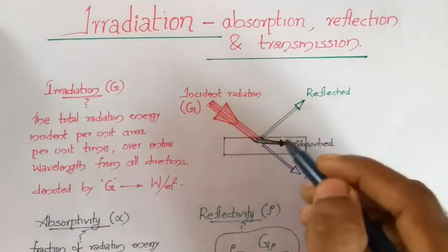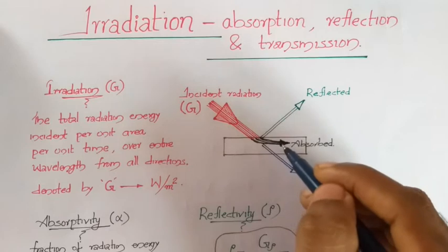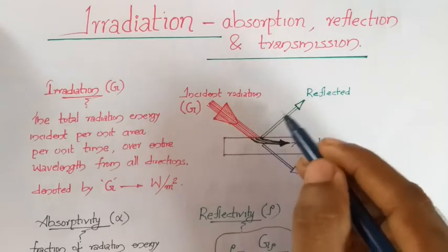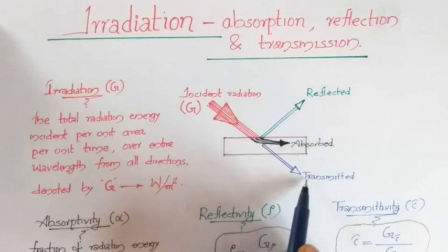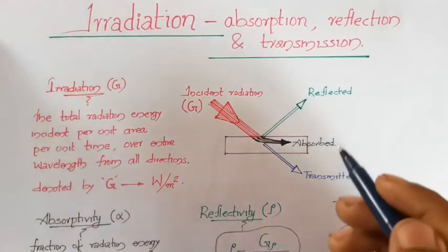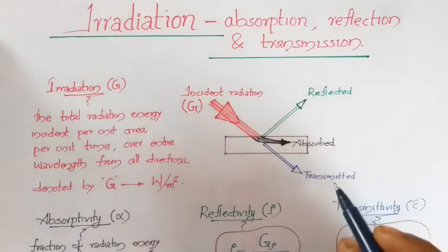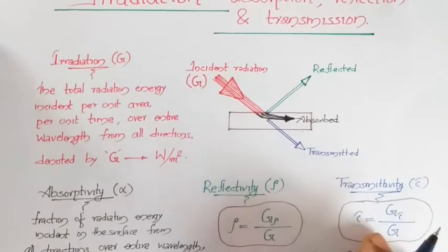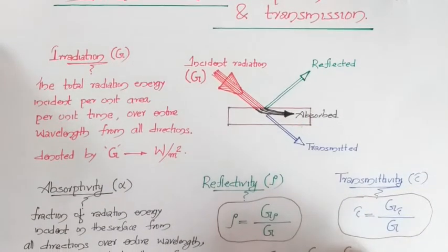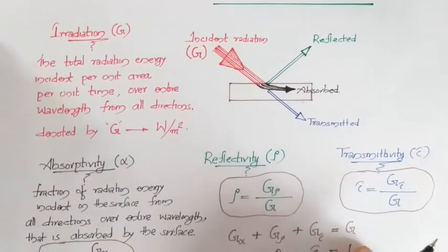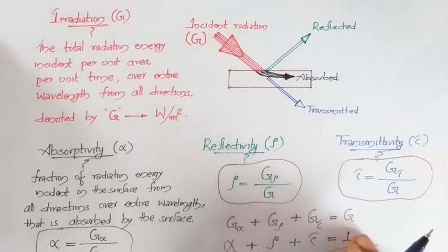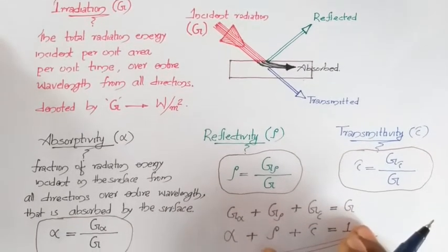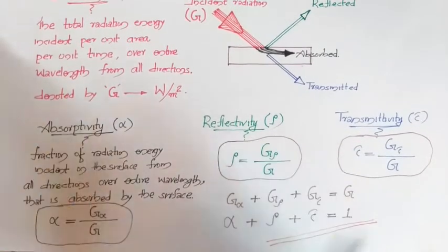The incident radiation can go in three ways: some of it can be absorbed by the material, some of it will be reflected back, and the remaining will be transmitted through the material. The amounts absorbed, reflected, and transmitted are measured in terms of ratios known as absorptivity, reflectivity, and transmittivity respectively.